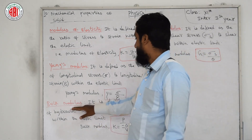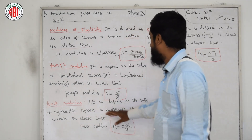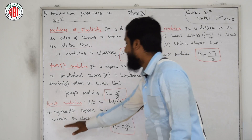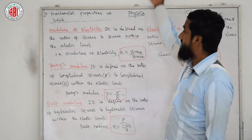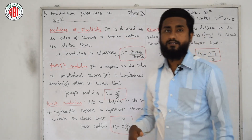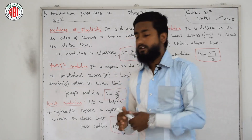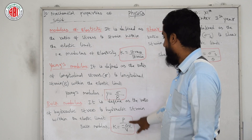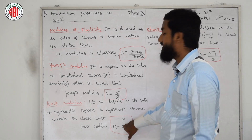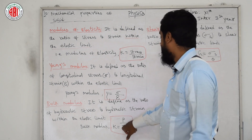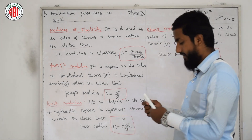Bulk modulus is defined as the ratio of hydraulic stress to hydraulic strain within the elastic limit. Both the general modulus and bulk modulus are denoted by K, but the formulas differ. Bulk modulus K = p divided by (−ΔV/V), where we take ΔV as negative.